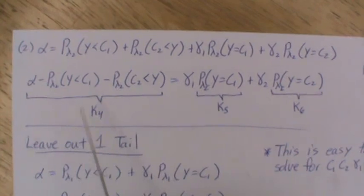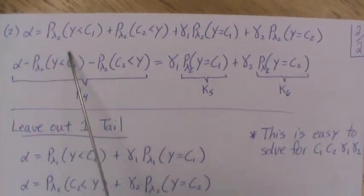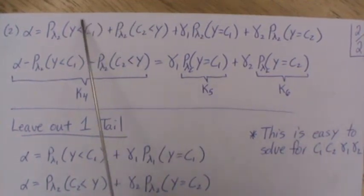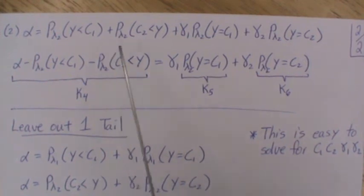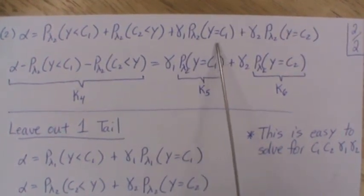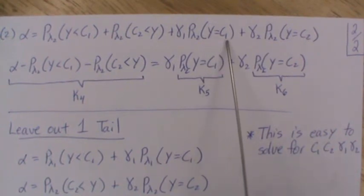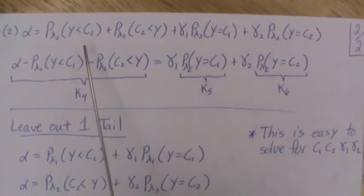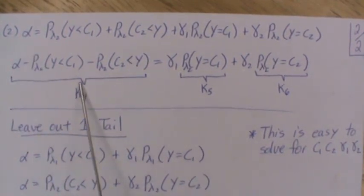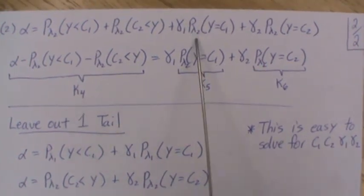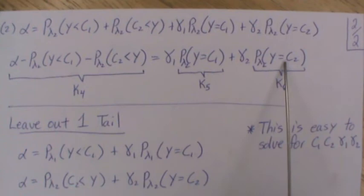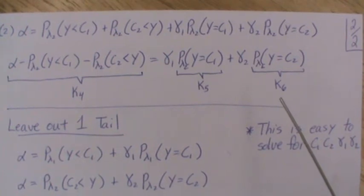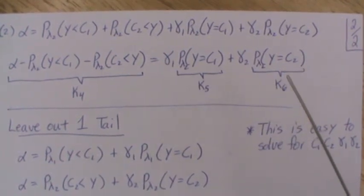So the second equation is alpha is equal to the expected value of the test function, assuming that lambda 2 is correct. And so this is 1 times the probability that we get a 1. Gamma 1 times probability that Y is equal to C1. Gamma 2 times the probability of assuming a gamma 2. We take these two values, subtract them over. We'll call that K4. These come down. We'll call this piece K5 and K6. And then in the R program that we use, it just takes a split second to derive and solve for gamma 1 and gamma 2.